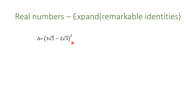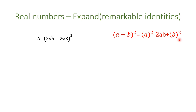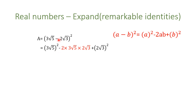Expanding by remarkable identities: this expression is in the form of (a − b)², which equals a² − 2ab + b². I encourage you to pause the video, take a paper, and try to solve it alone. We are back — a squared is the first number in the parenthesis squared, and we have a negative sign.